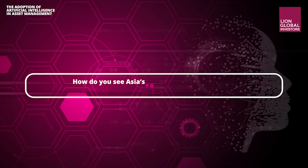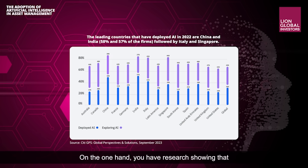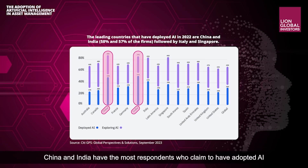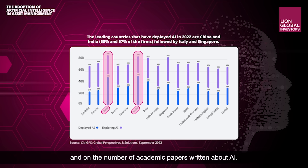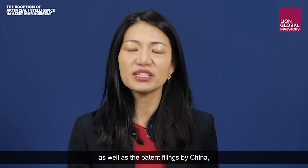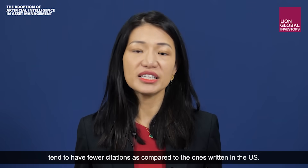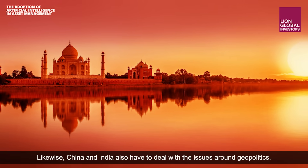How does Asia's adoption and trajectory for artificial intelligence compare to Europe and the US? The outlook in Asia is actually quite varied. Research shows that China and India have the most respondents claiming to have adopted AI, and China is comparable to the US in terms of the number of AI patent filings and academic papers written. However, the papers and patent filings from China tend to have fewer citations compared to those from the US. China and India also have to deal with issues around geopolitics.